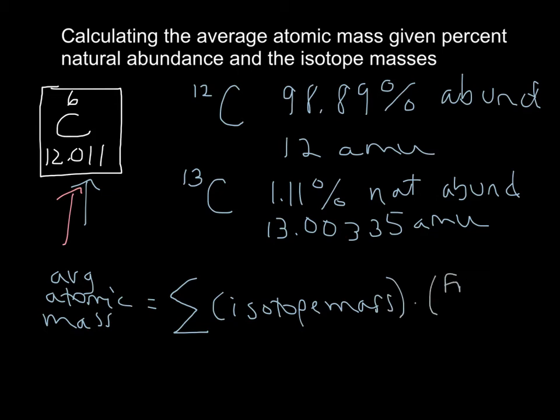So average atomic mass is equal to the sum of each isotope mass times the fractional abundance.